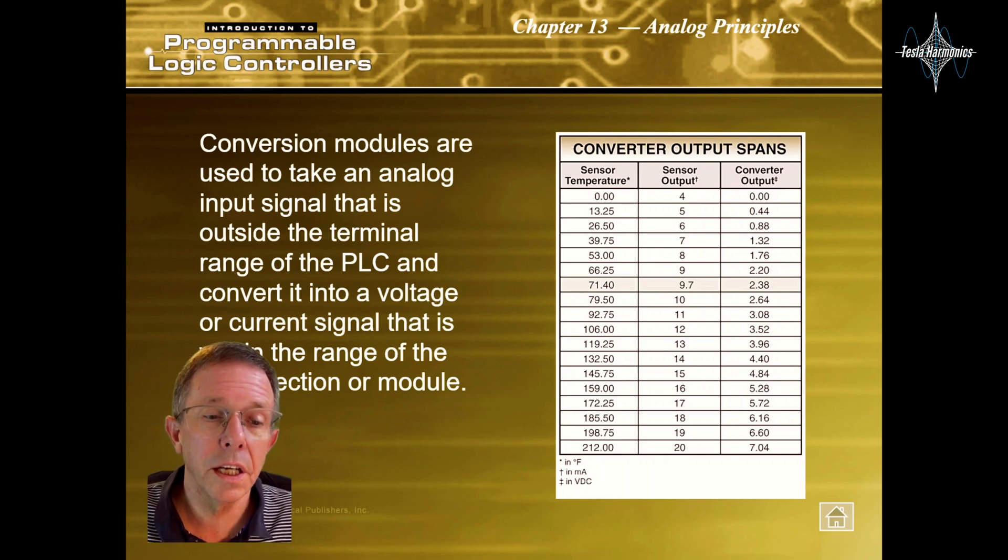Conversion modules are used to take an analog input signal that is outside the terminal range of the PLC and convert it to a voltage or current signal that is within the range of the input section of the PLC.